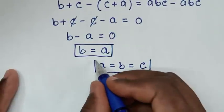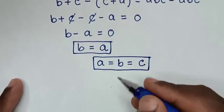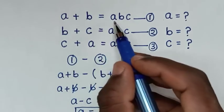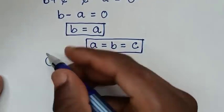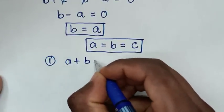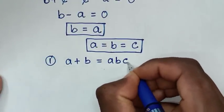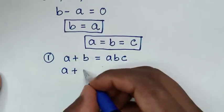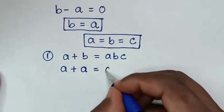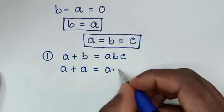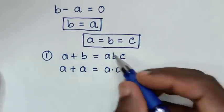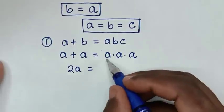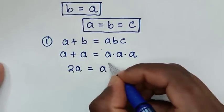From the first equation, A plus B equals ABC. Since B equals A and C equals A, we substitute: A plus A equals A times A times A. So 2A equals A cubed.